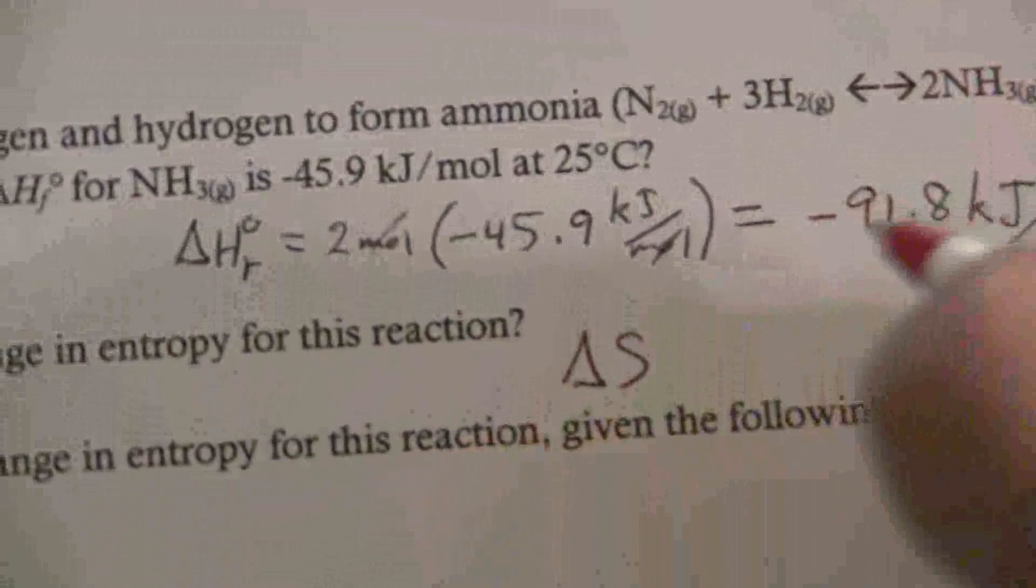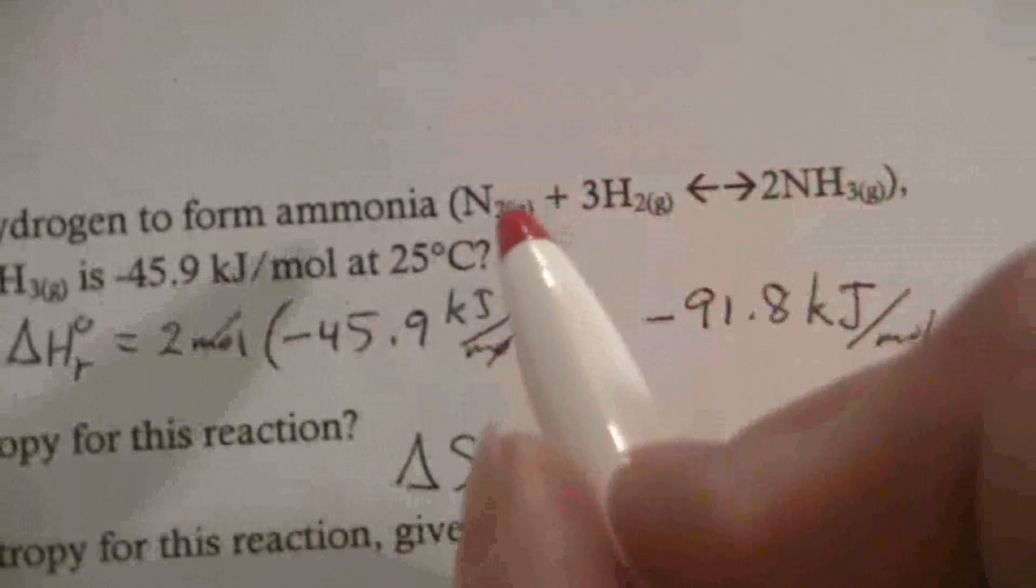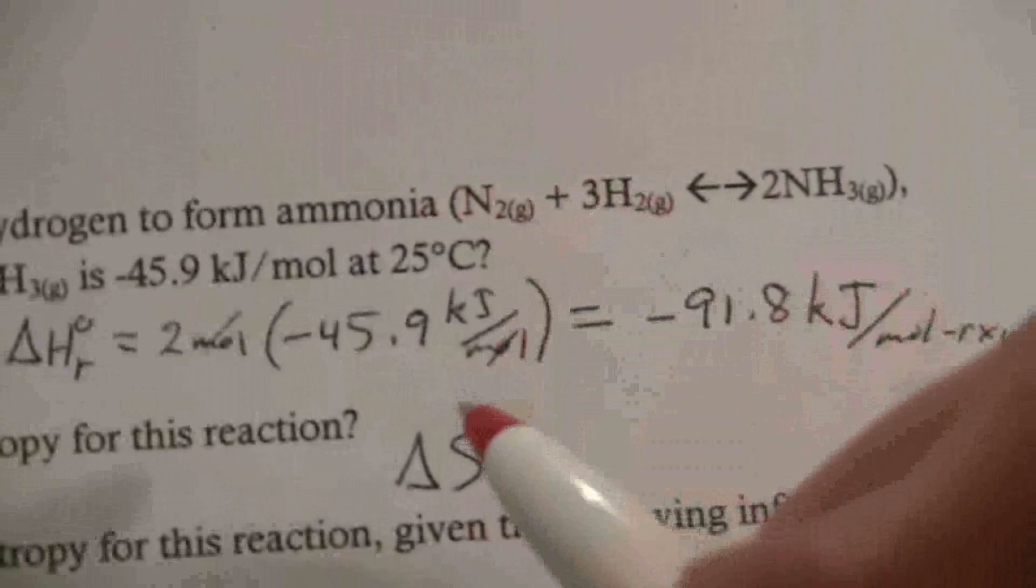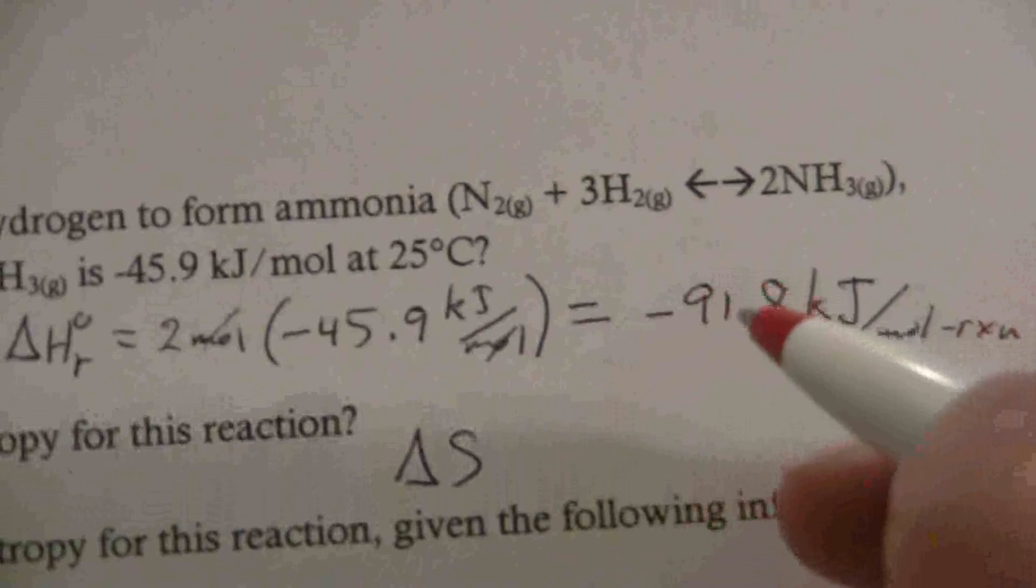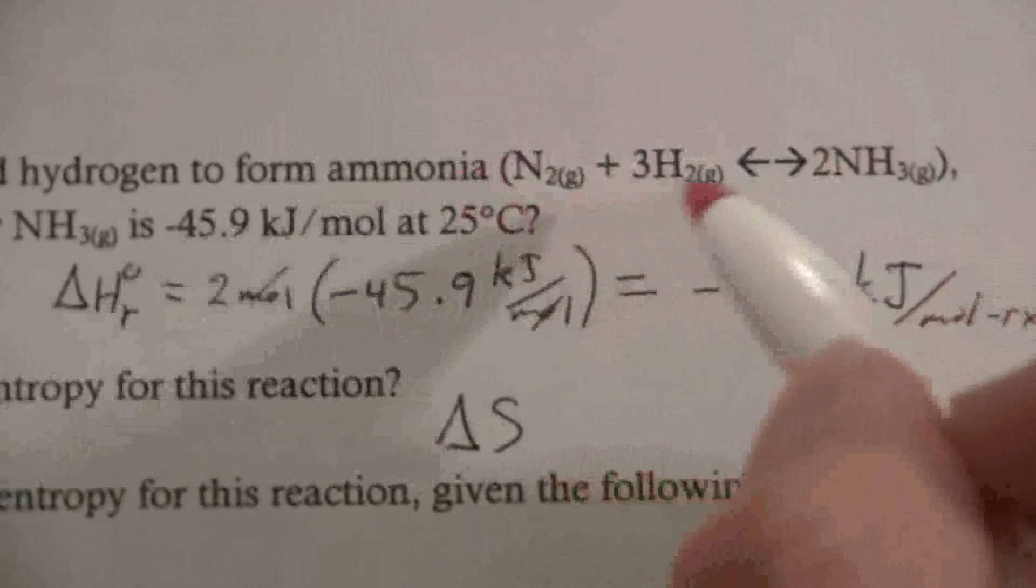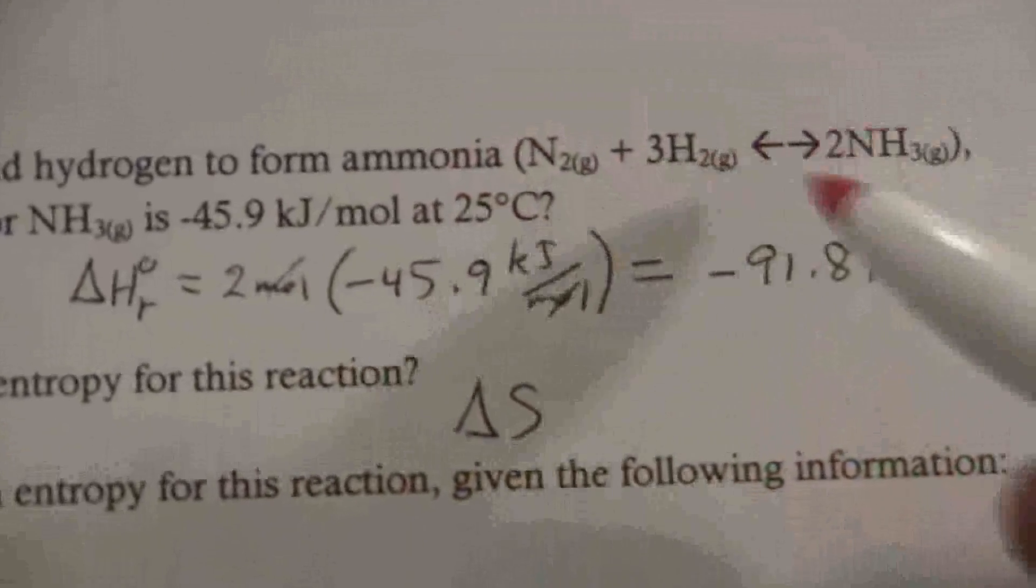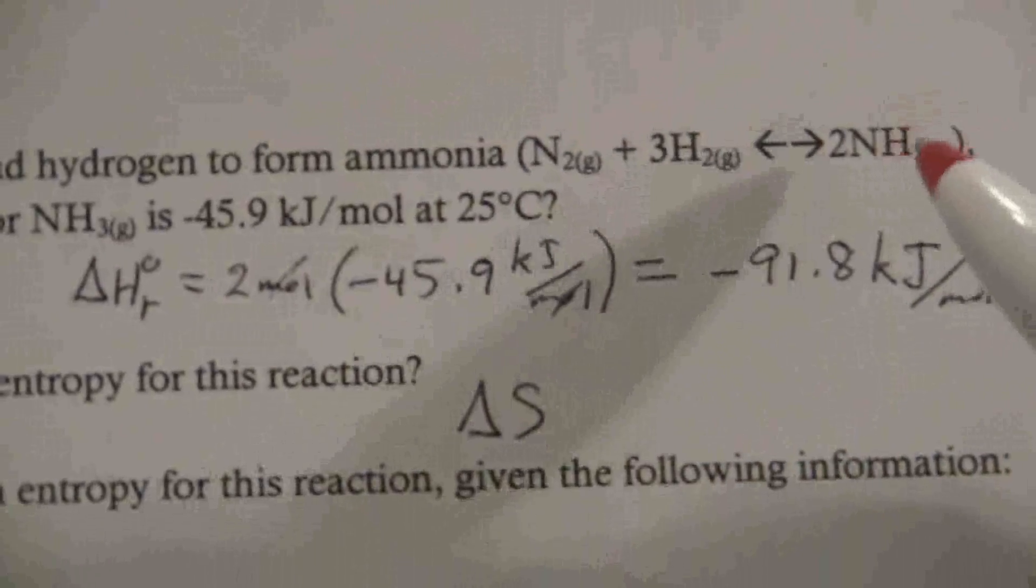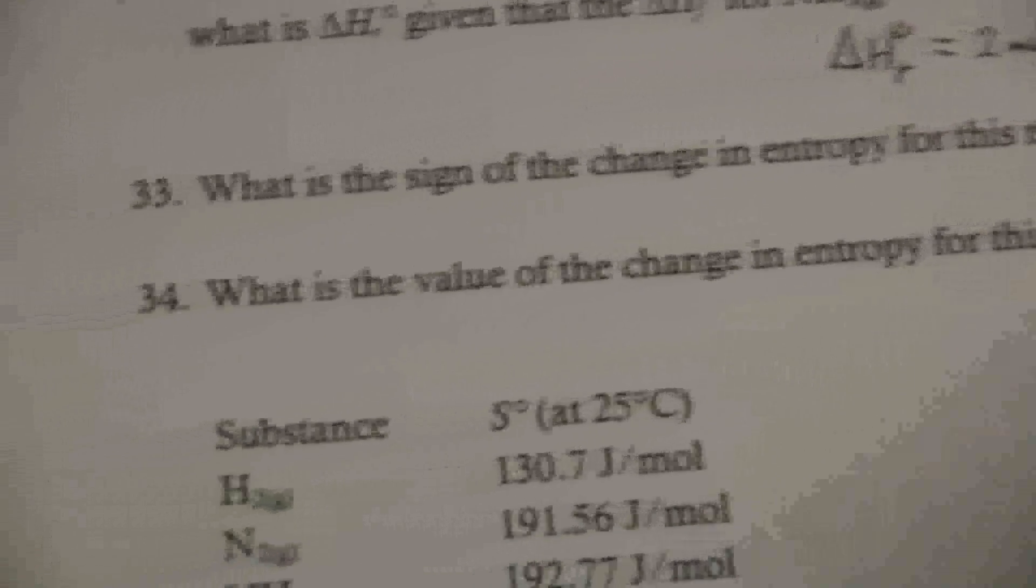So the change in entropy, we'll recognize the sign based on the number of molecules. You'll remember that the entropy is proportional to the number of states. So the number of states will be greater when you have more molecules. You can distribute the energy over more molecules as opposed to fewer molecules. So here we're going from higher entropy to lower entropy, so we're decreasing, so the change in entropy will be less than zero or negative.